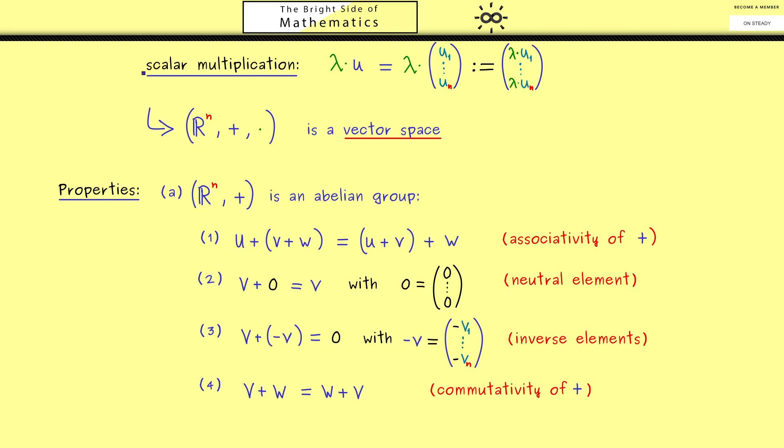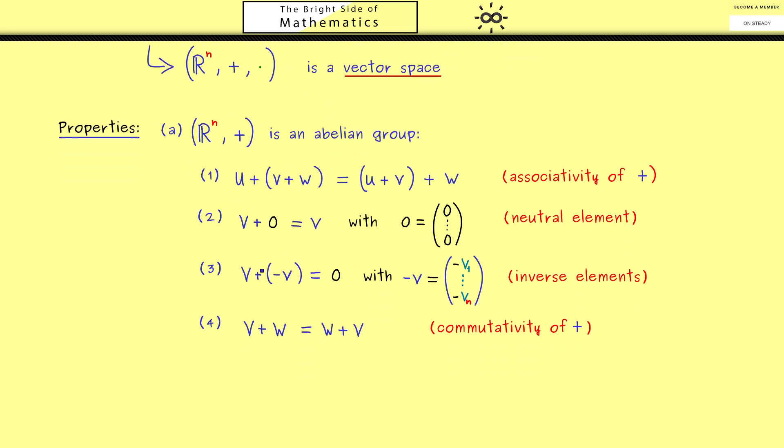And then the second part should be given by the scalar multiplication. Here I want to summarize two properties by saying that the scalar multiplication is compatible. Here please recall the scalar multiplication is a little bit special because it's a map from R times R^n into R^n again. So it's different from the addition that gets two vectors as an input. Here we don't have this symmetry.